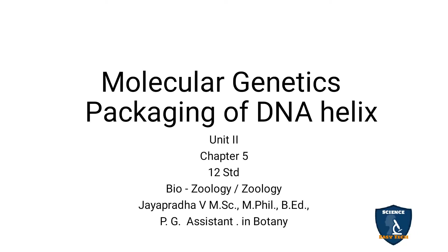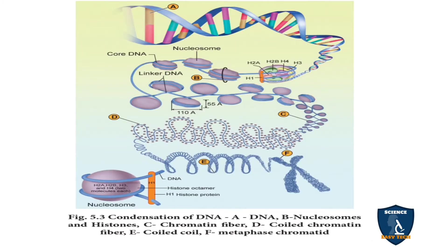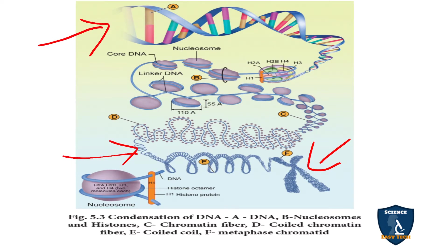Today we will discuss the packaging of DNA in molecular genetics, Chapter 5, Unit 2. We have discussed in molecular genetics about DNA and RNA. DNA is the genetic material in most organisms; only in some organisms is RNA the genetic material. How is this DNA packed in the chromosome? You can see the double helix structure of DNA with coiling, and that coiling is packed into chromosomes.